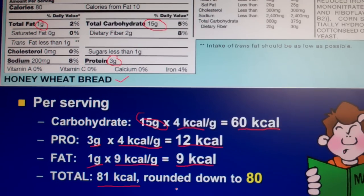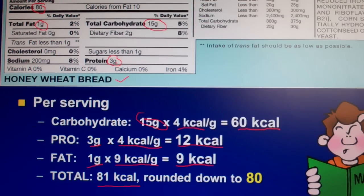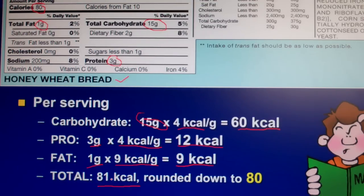It's 81 kilocalories total. The label rounded it down to 80, and what's actually happening is those gram values are probably something like 14-point-something and 3-point-something, so the rounding accounts for that. In reality it comes out to 81 based on the numbers we have here, but they call it 80 total.